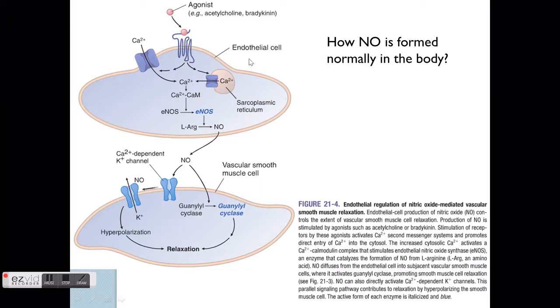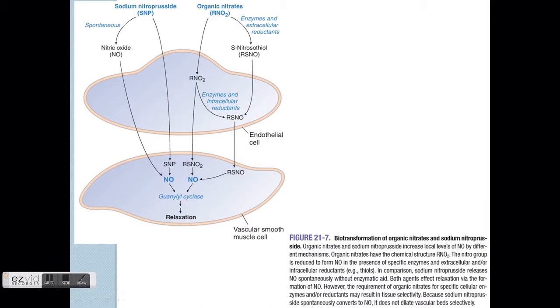The endothelial cells are the cells which are directly exposed to the blood flow in the blood vessels. Therefore, it's exposed to all sorts of agonists and so on, which are circulating in the blood. This causes the synthesis of NO through the action of this eNOS, which is indicated by this endothelial nitric oxide synthase. So the formation of this NO causes the diffusion of NO to the neighboring cells, which is the vascular smooth muscle cells, to cause all the relaxation effect eventually.